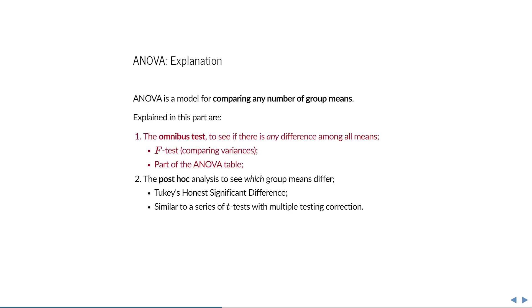First, an omnibus test is performed to see if there is any difference in group means. If that test is significant, then a post-hoc analysis is conducted to see which group means differ.